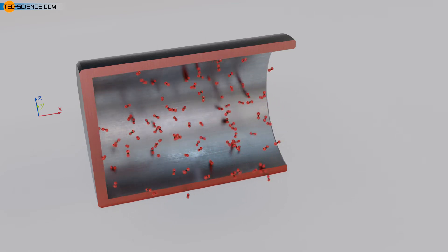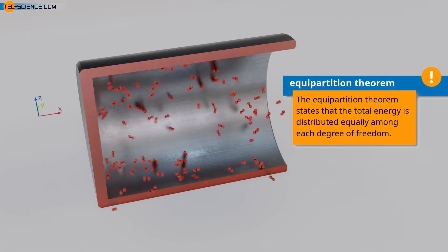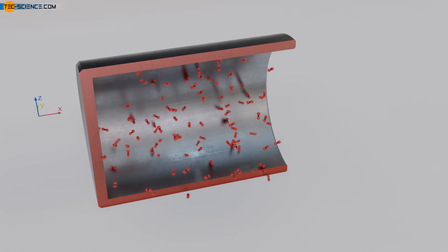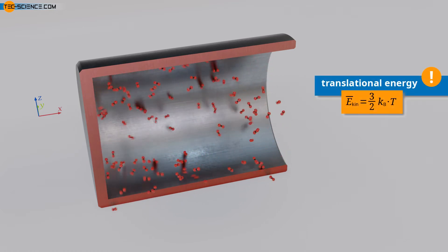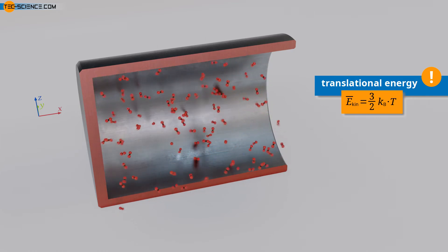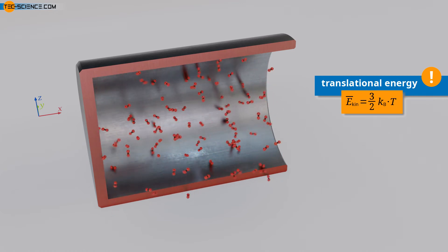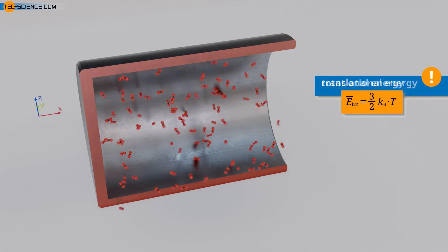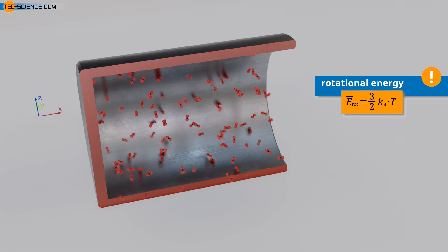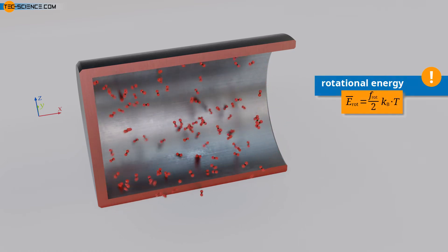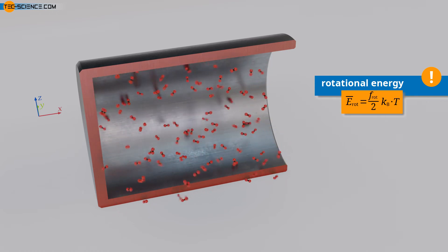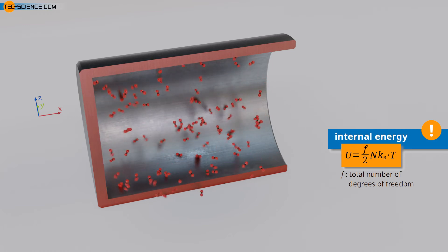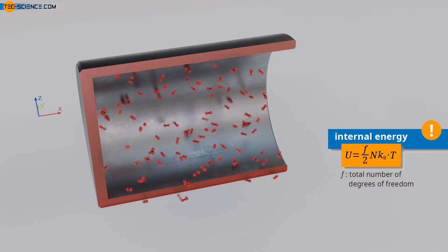We can thus extend the equipartition theorem to arbitrary degrees of freedom: the total energy is distributed equally among each degree of freedom. Note that temperature is determined only by the translational kinetic energy of the molecules, regardless of whether the molecules rotate or not. At a given temperature, the same amount of energy is always attributed to translational motion as determined by the Boltzmann equation. According to the equipartition theorem, the same amount of energy must also be present as rotational energy, as long as the molecules can rotate, with the same formula applying to each rotational degree of freedom. A diatomic gas with 6 degrees of freedom therefore contains twice the internal energy at the same temperature and number of molecules compared to a monatomic gas with 3 degrees of freedom.